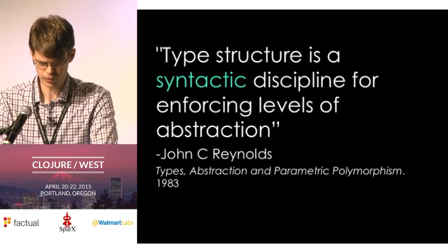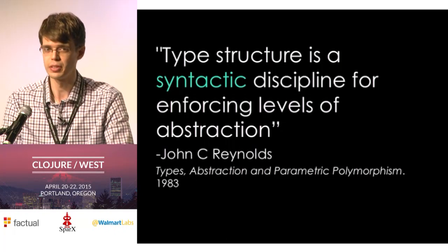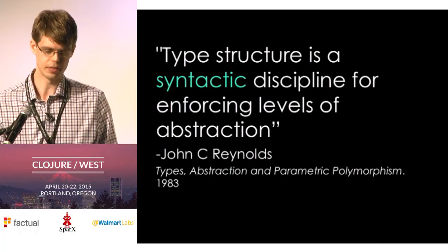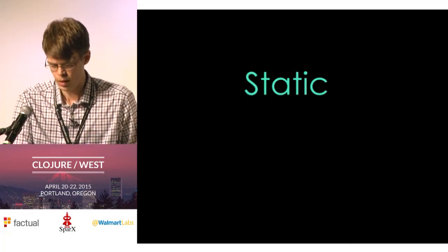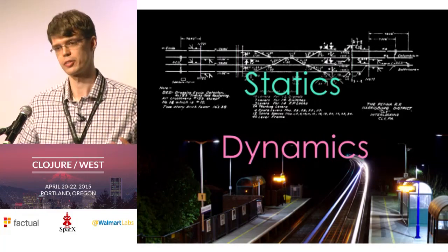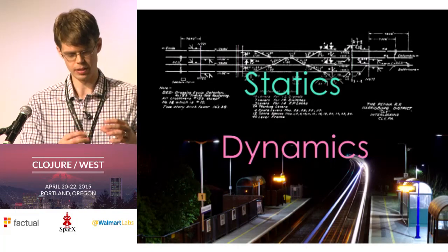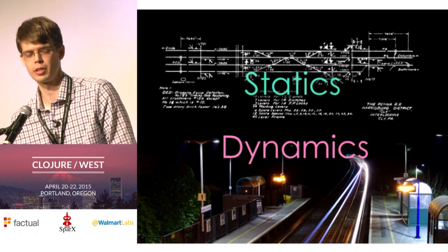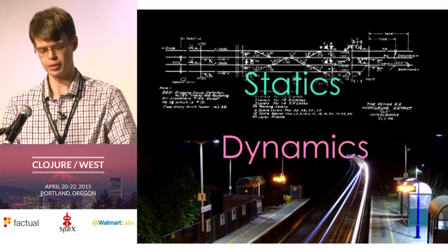Types help us talk about this distinction at the level of syntax. When we talk about syntax here, we don't mean tabs versus spaces or structured data versus strings. The idea is it's just a static description of a program — what we check into source control. Every programming language has a static semantics and a dynamic semantics. Static semantics is about how we combine descriptions and what's a valid description. Dynamics is what happens when we plug our programs in and press go.